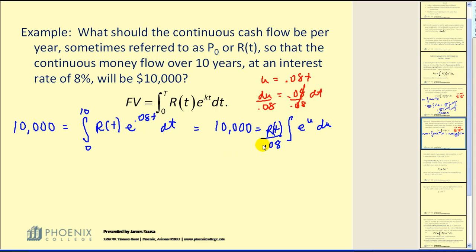To clean this up, what I might do now is multiply both sides by .08. That would give us 800 is equal to R of T times the integral of E to the U, DU.